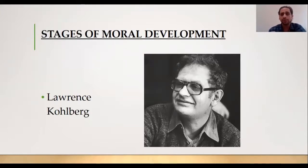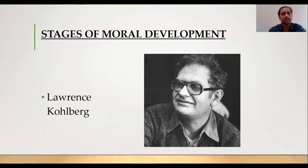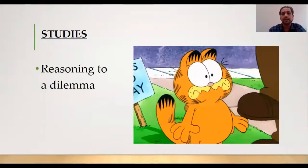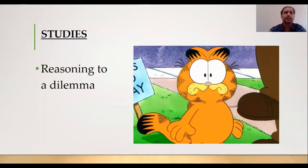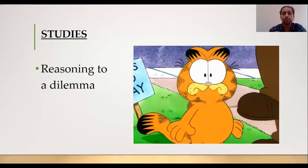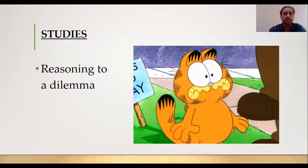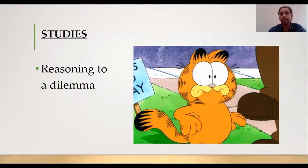So how do people determine what is right or wrong? It follows a specific pattern of human behavior. Kohlberg conducted different studies in which different age groups were asked to offer reasoning to a dilemma. A dilemma is a situation in which a difficult choice is to be made — a choice between two difficult alternatives, especially ones that are equally undesirable.